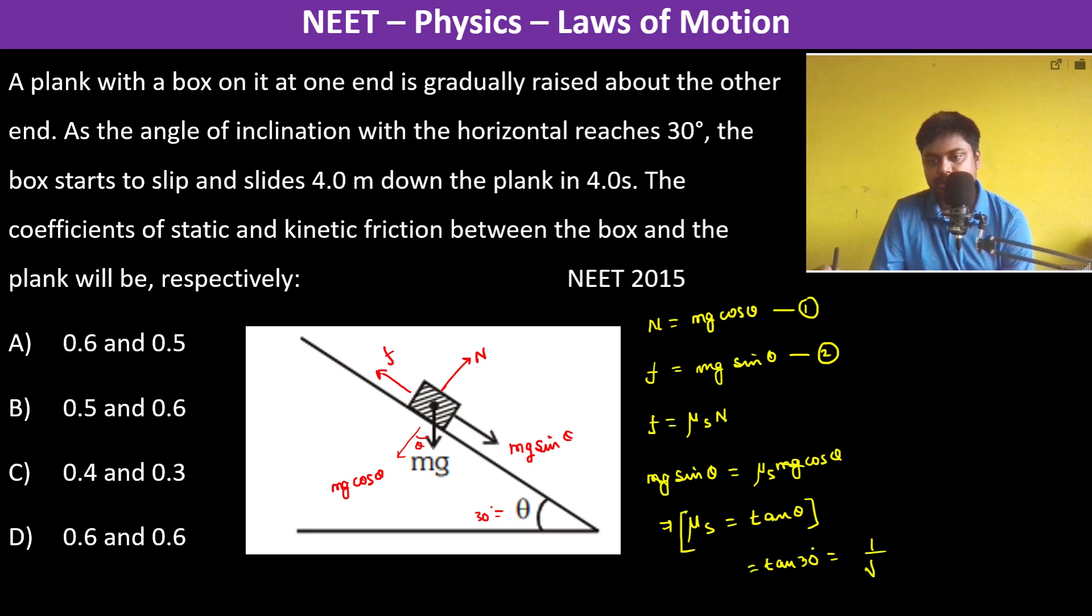Which is 1 by root 3. So now what is 1 by root 3? Definitely 1 by root 3 is actually 1 divided by 1.7 or something.